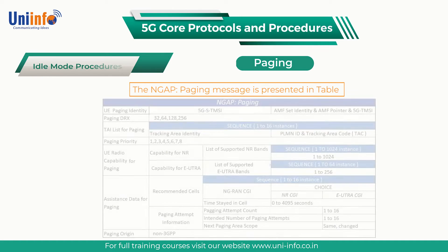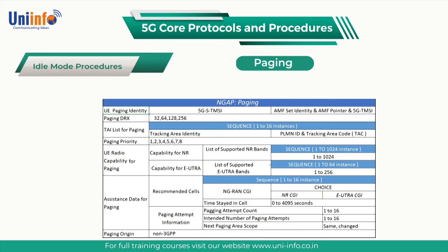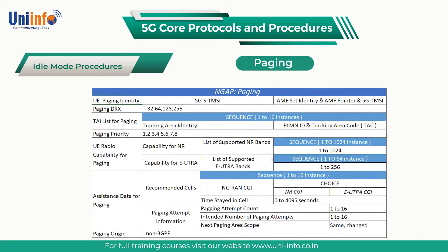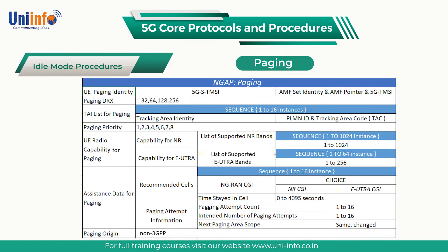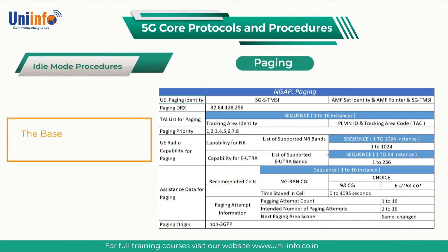The NG-AP paging message is represented in a table on the screen. Only the UE paging identifier and TAI list for paging fields are mandatory, so the remaining fields may be excluded from the message.